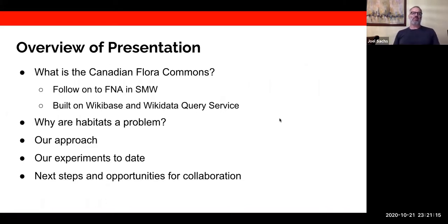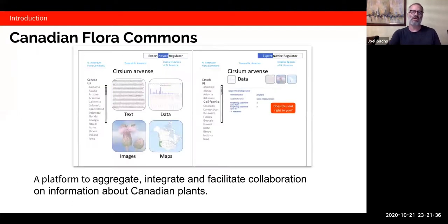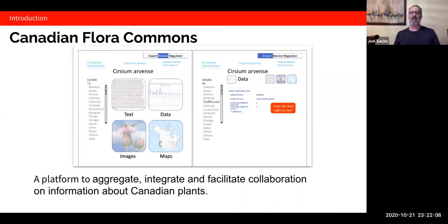I'll talk about the two projects this work comes out of. If you've been to TDWG before, you might have seen us describe our Flora of North America project, which was built on Semantic MediaWiki. The Canadian Flora Commons grows out of that — we switched from SMW to Wikidata and the Wikidata query service. The goal for the Commons is to be a dynamic flora with character-based search plugged into the semantic web.